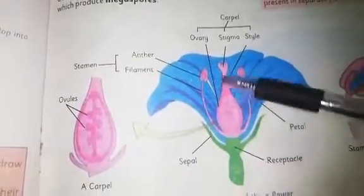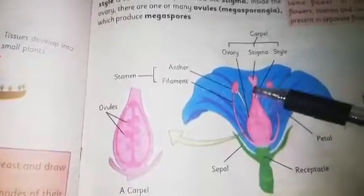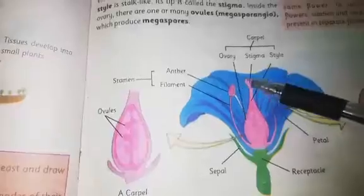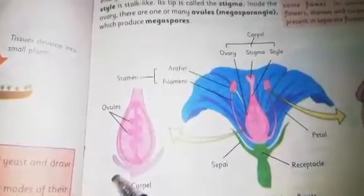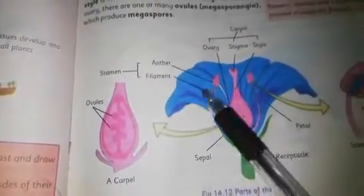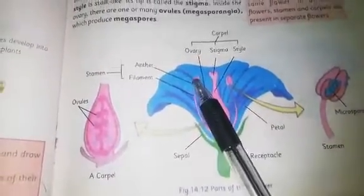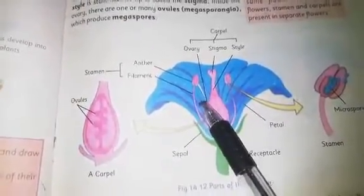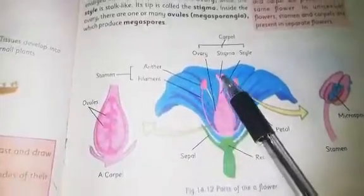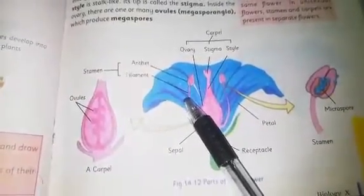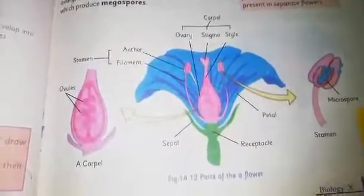Looking at the diagram, the middle part of the flower shows the entire carpel. The swollen base is the ovary, the neck or stalk is the style, and the tip is the stigma. Inside the ovary, many ovules or eggs are present. This diagram shows a bisexual or hermaphrodite flower — one that contains both male and female reproductive parts. If a flower has only carpels or only stamens, it is called a unisexual flower, where male and female flowers are separate.